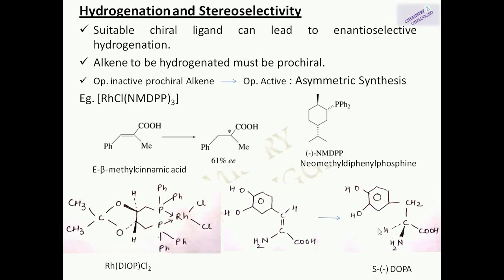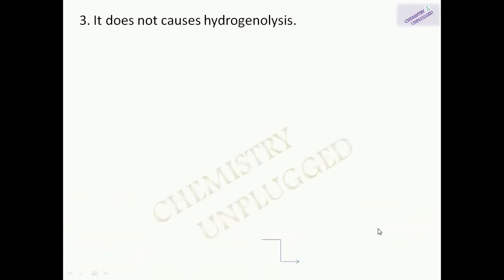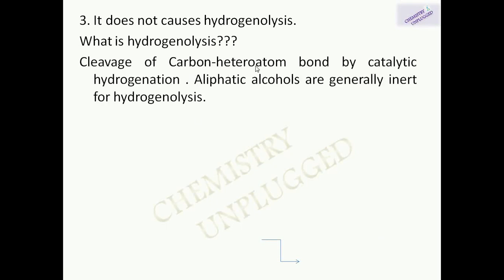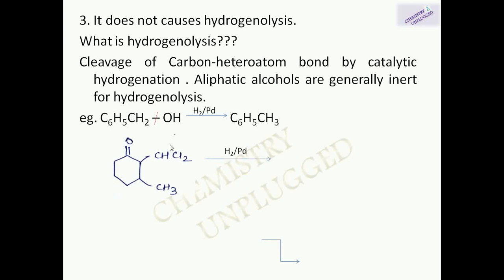Wilkinson's catalyst does not cause hydrogenolysis. Hydrogenolysis is the cleavage of a carbon–heteroatom bond followed by catalytic hydrogenation. Aliphatic alcohols are generally inert for this reaction, but aromatic compounds show it. For example, with benzyl alcohol using H₂/Pd, the carbon–oxygen bond is cleaved and the product is hydrogenated to give toluene. In another example, H₂/Pd breaks a C–Cl bond and then hydrogenates it.